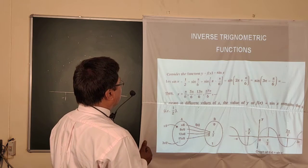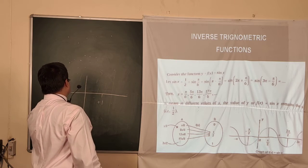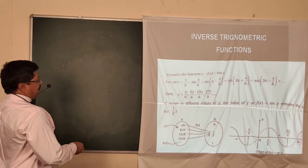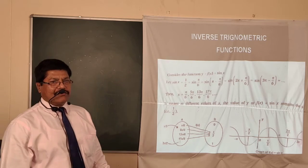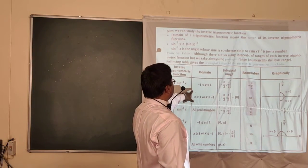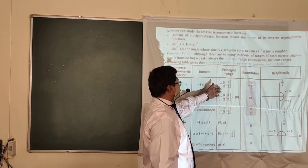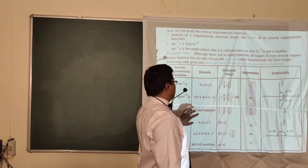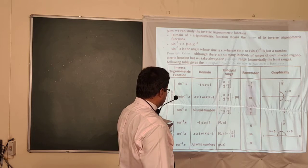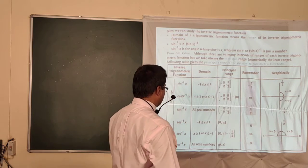Trigonometric inverse functions are restricted functions. Under certain limits you can find the inverse function. For sin x, the domain is [-1, 1] and the range is [-π/2, π/2]. Under this range it is an inverse function, otherwise not. Similarly for cosec, tan, cos — with range [0, π] and domain [-1, 1], and similarly sec and cot.